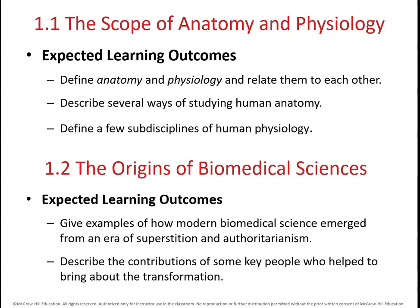This video is related to sections 1.1 and 1.2 in your anatomy and physiology textbook. Section 1.1 has three discrete learning goals. First, we want to be able to define anatomy and physiology and tell the difference between the two. Then we're going to talk about several different techniques we can use when we're studying anatomy. And finally, we want you to be able to describe at least a few of the specialties within the field of physiology biology by the time you finish this video.